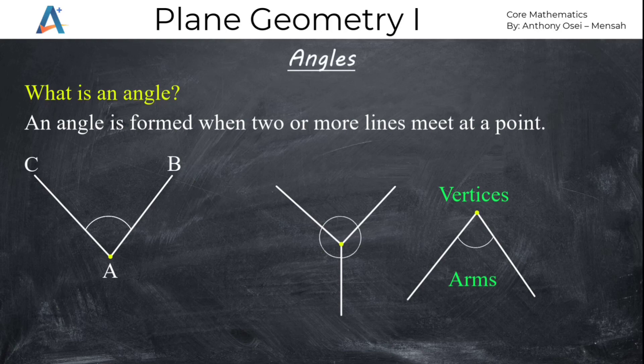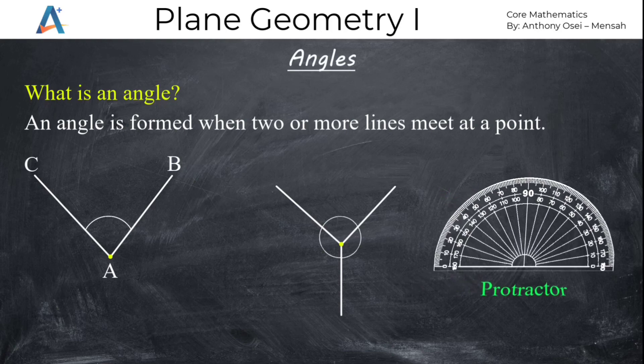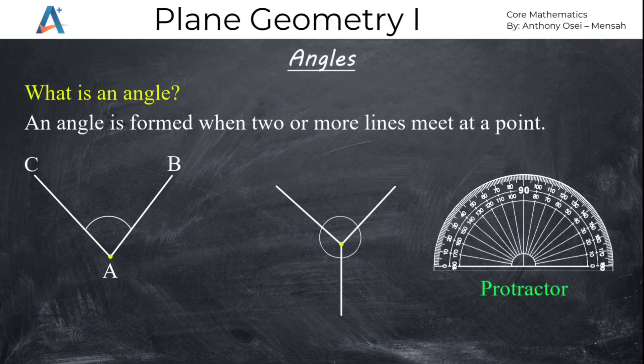An angle is measured with an instrument called a protractor. For you to get an angle measured accurately, you need a protractor. In this particular topic, we are going to calculate for the angles rather than measuring them with a protractor. But all we need to understand is that angles are measured accurately with a protractor. By diagrams, we can get more examples and demonstrations of angles.